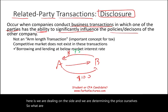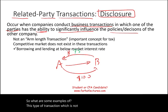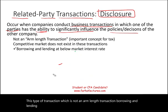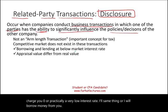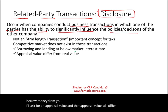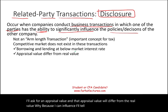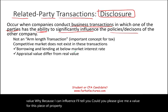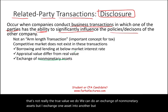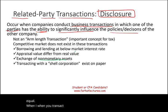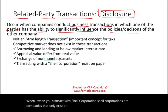Some examples of non-arm's-length transactions include: borrowing and lending money at below-market interest rates — for example, lending money at zero or a very low interest rate. Another example is requesting an appraisal value that differs from the real value, because one party can influence the appraiser. You can also do an exchange of non-monetary assets where the values are not equal. Additionally, when you transact with shell corporations — companies that only exist on paper — you most likely have a related party transaction. Those are some key examples.